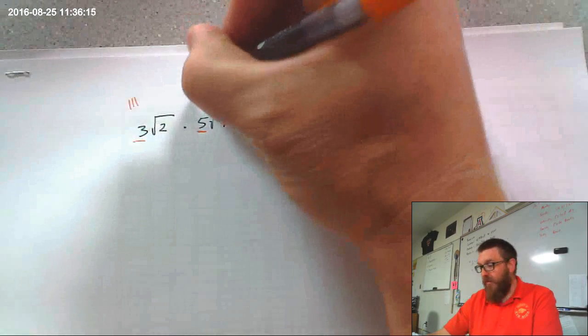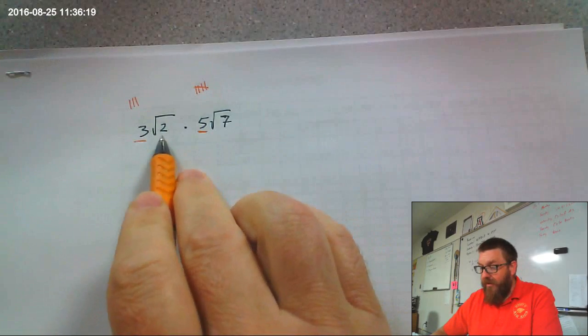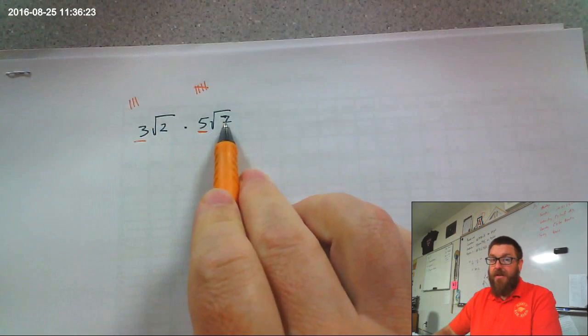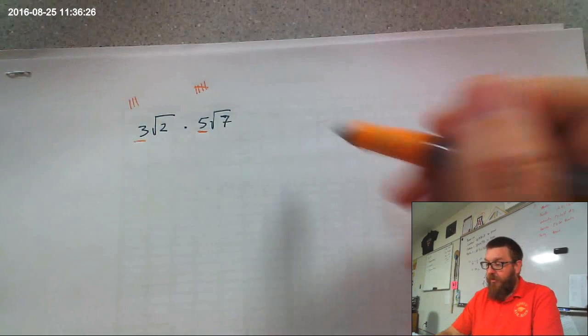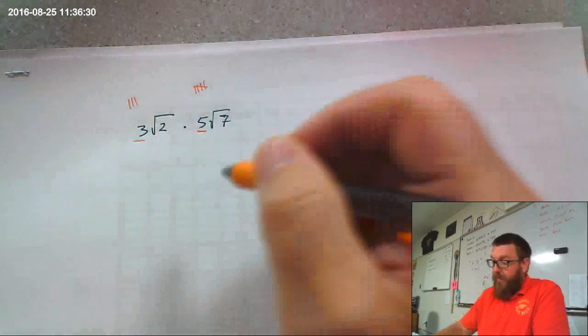3 and 5 are rational numbers. The reason I mention that, I cannot write this number, square root of 2, with hash marks. I can't write the square root of 7 with hash marks. They are irrational. This is what we write instead. And it means what number times itself is 7.